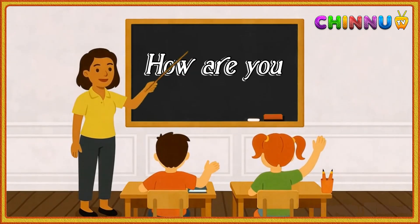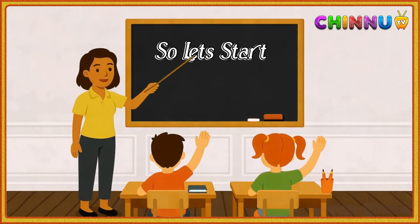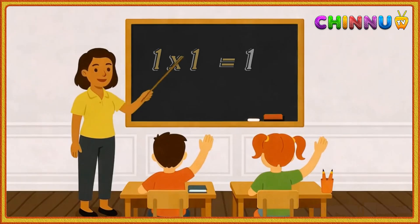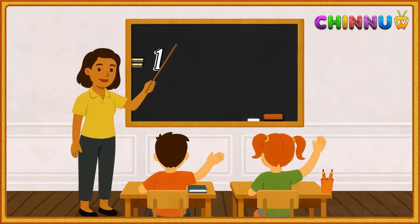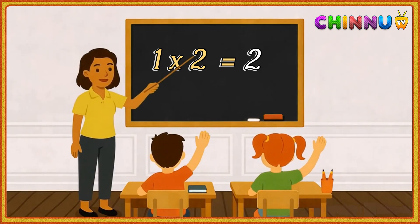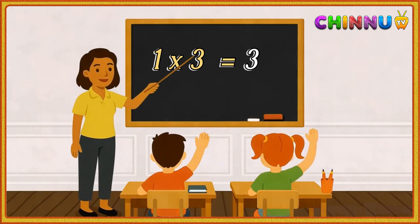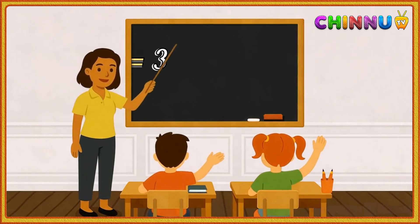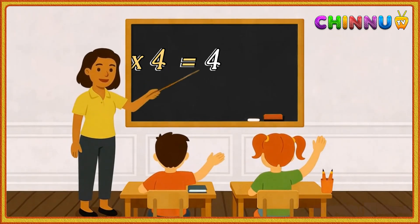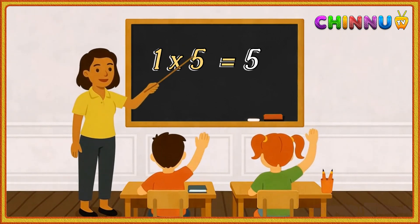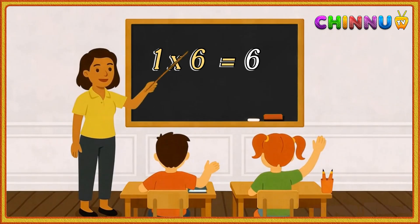Hello kids, how are you today? We are going to learn the table of one. So let's start. 1 one is 1, 1 two is 2, 1 three is 3, 1 four is 4, 1 five is 5, 1 six is 6.